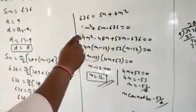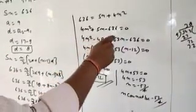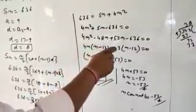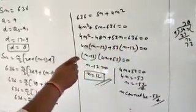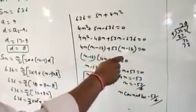Factorize 4N square plus 5N minus 636 equal to 0. Then 4N square minus 48N plus 53N minus 636 equal to 0. 4N common N minus 12 plus 53 common N minus 12 equal to 0.